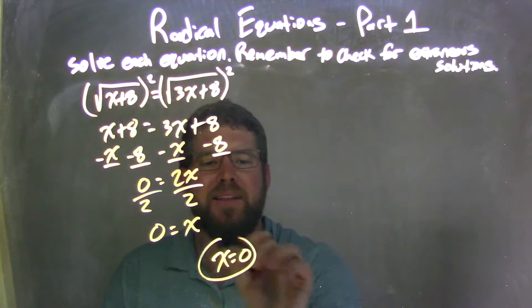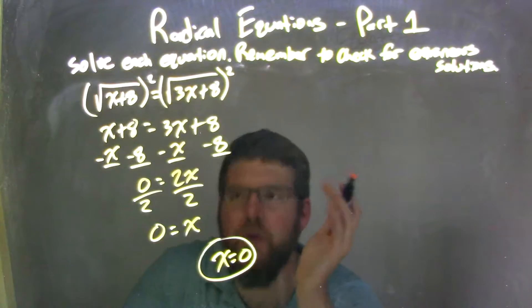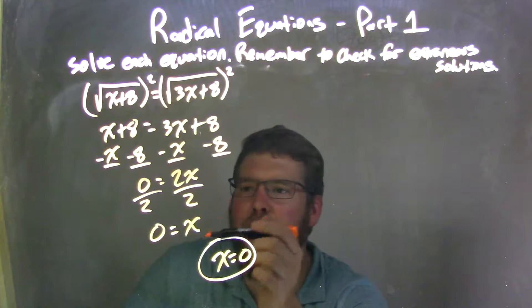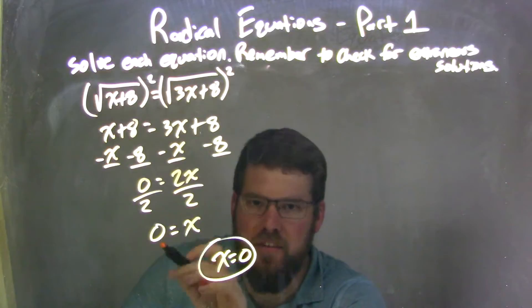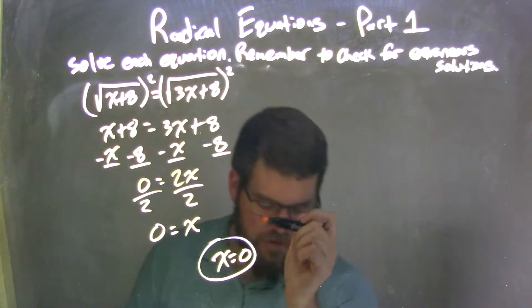Now be careful, a lot of students will see 0 divided by 2 and say like undefined. No, 0 is on top, divided by 2 is great, but it becomes 0. Be careful with that. And I rewrote it to have x come first, because that looks nice and neat.